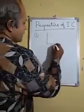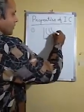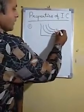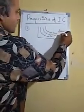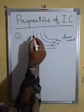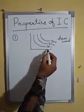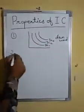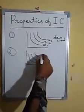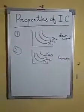First is that all IC curves are downward sloping. The reason is that when you do less expenditure on one good, you will do more expenditure on the other good. Second, all IC curves are convex in shape.